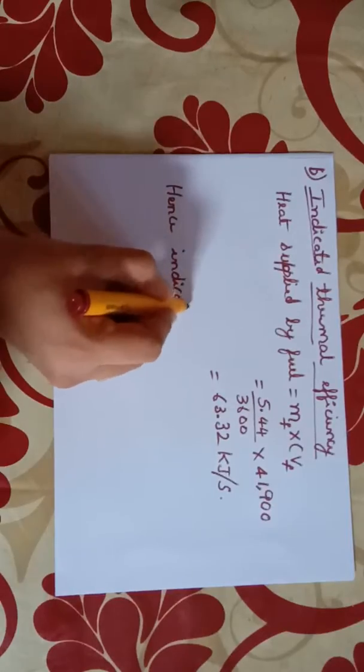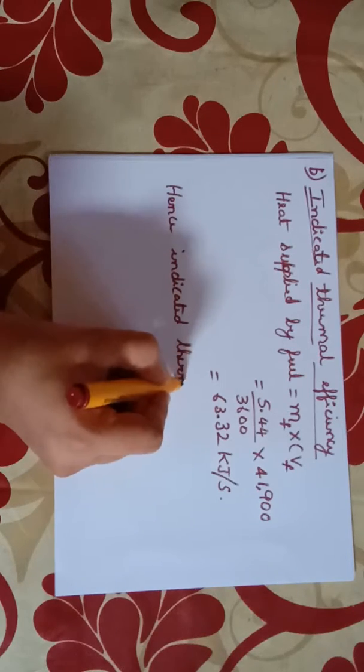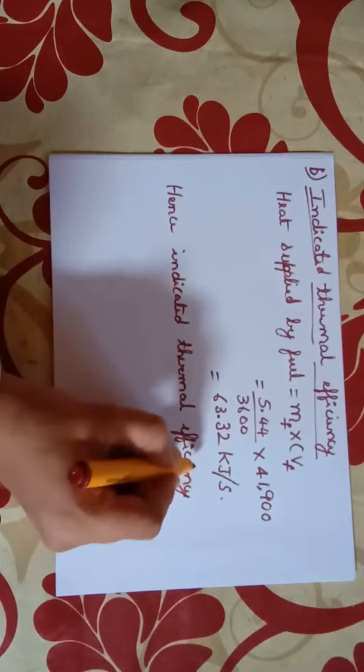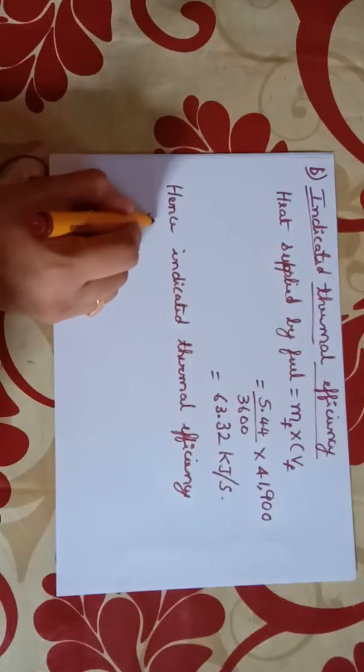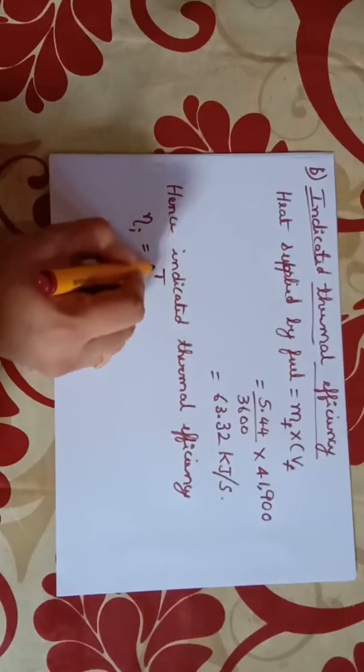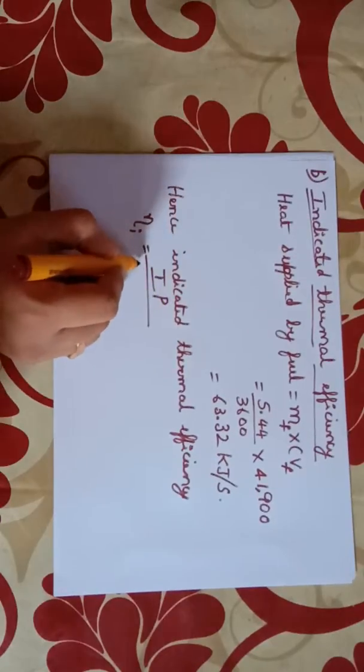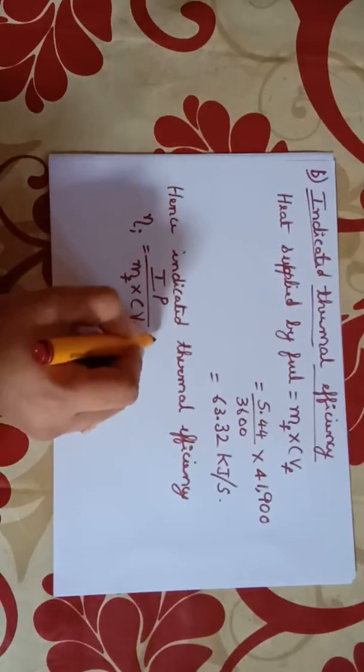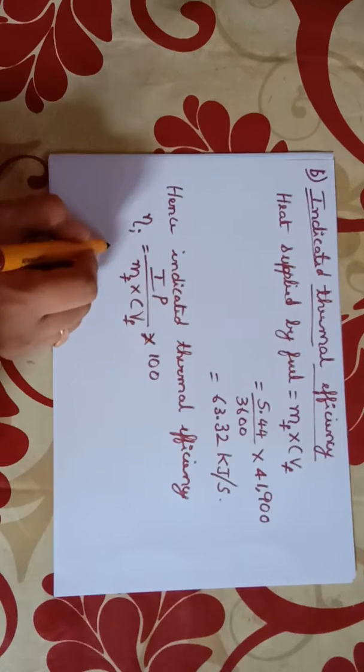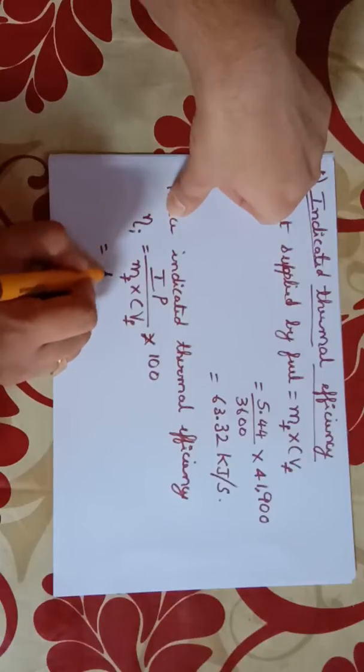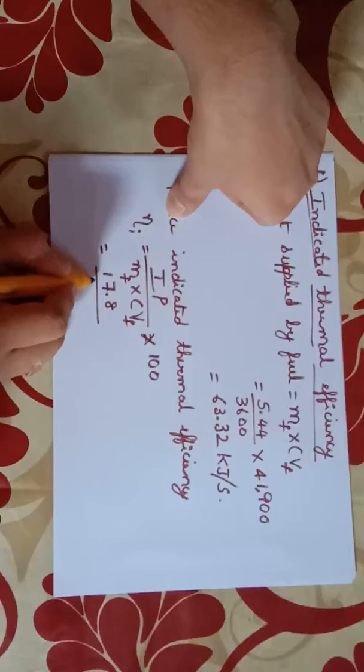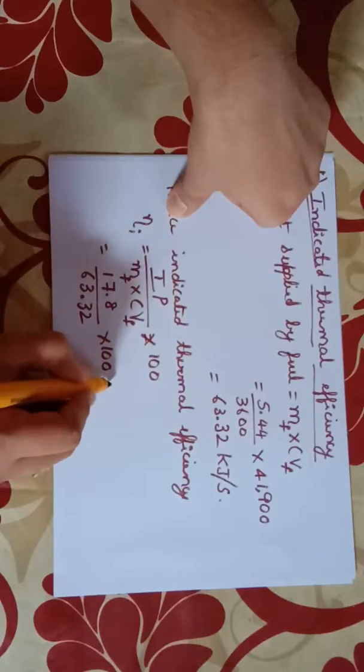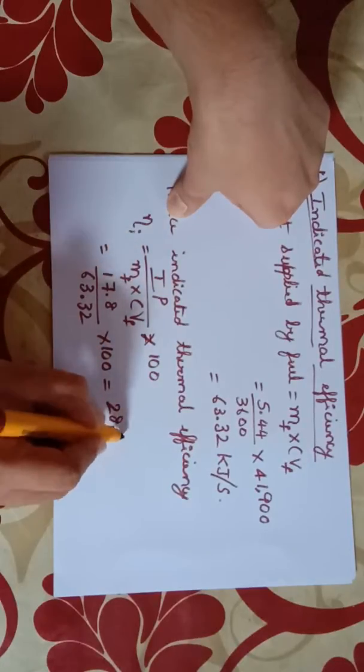Hence indicated thermal efficiency, eta I, is equal to IP by mf into CVf into 100, that will be equal to 17.8 by 63.32 into 100, that is equal to 28.11 percent.